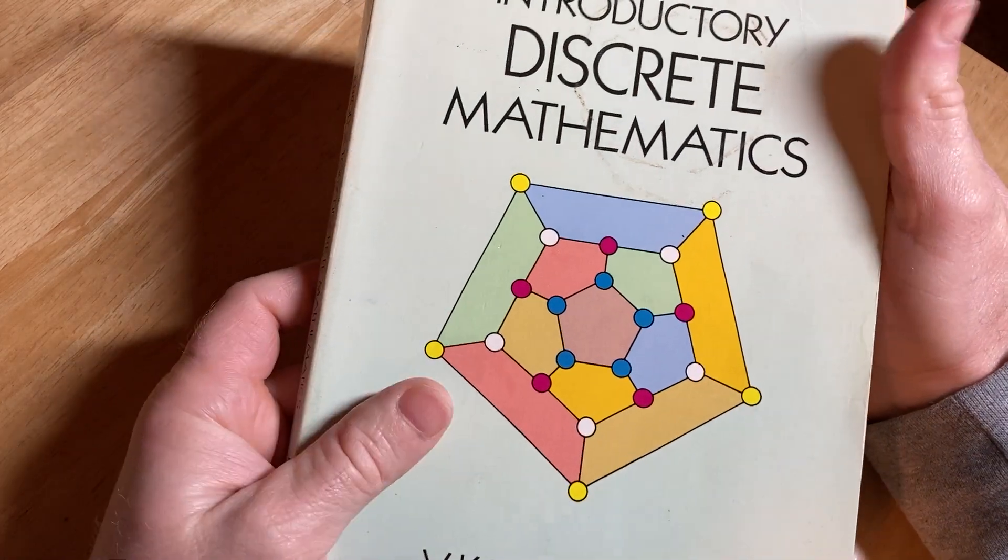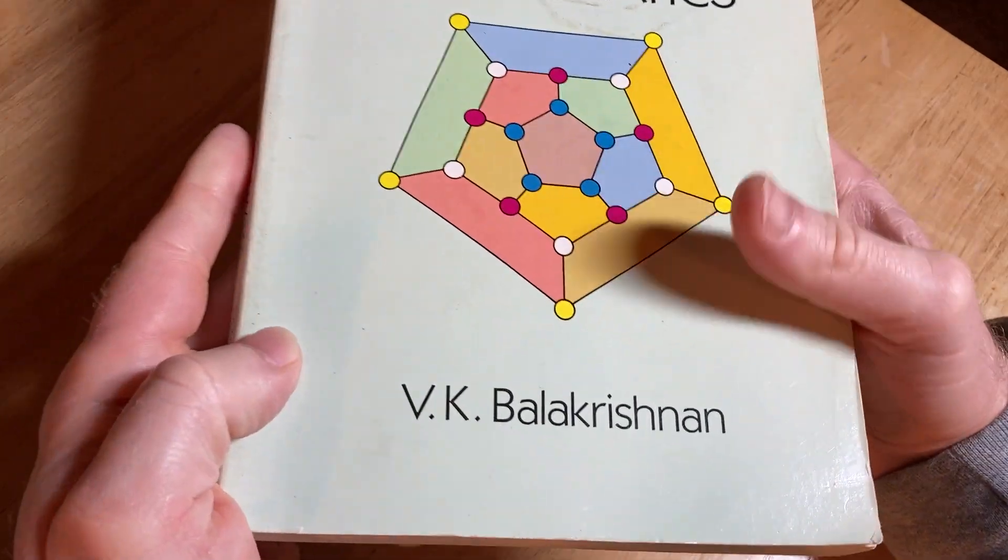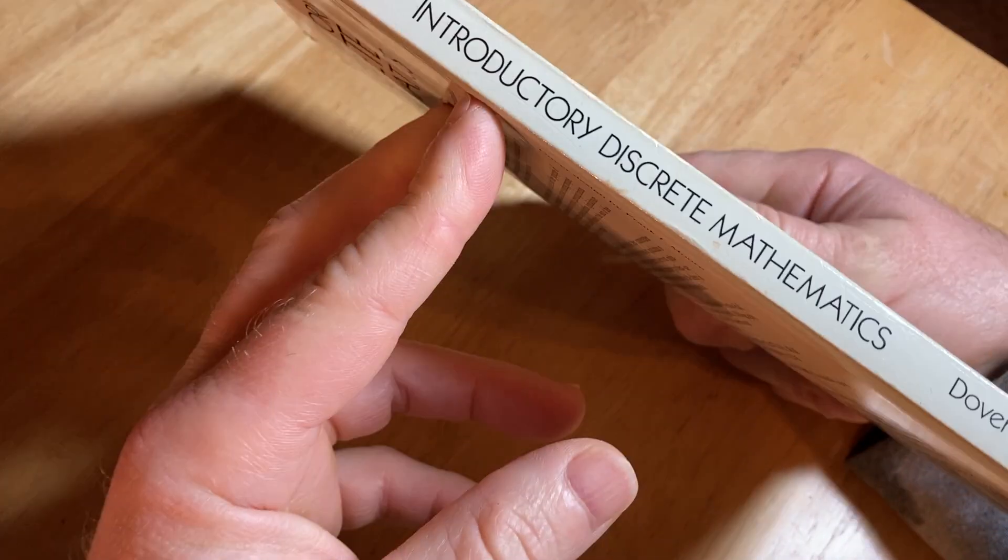This is a book that you can use to learn discrete mathematics. It is called Introductory Discrete Mathematics and it was written by V.K. Balakrishnan.